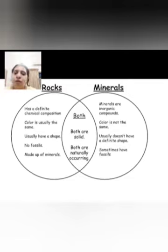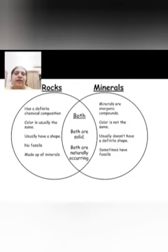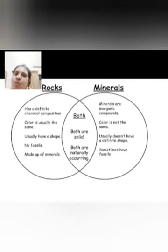Rocks do not contain fossils — fossils meaning remains of dead animals, bones, or leaves. Sometimes you have fossils in minerals; for example, coal is formed under heat and pressure and is particularly a mineral. So coal is made up of some minerals, and rocks are also made from minerals.